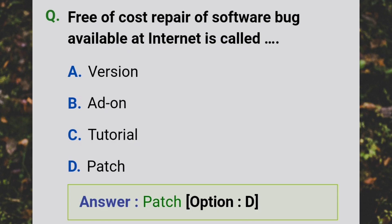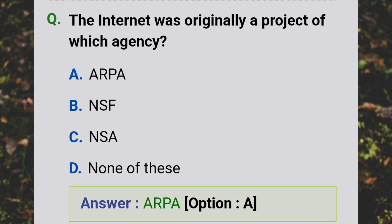Free of course repair of a software bug available on the internet is called a patch. The internet was originally a project of which agency? Answer: ARPA.